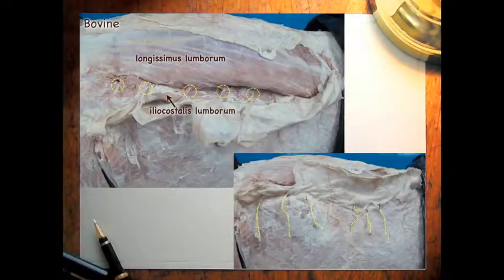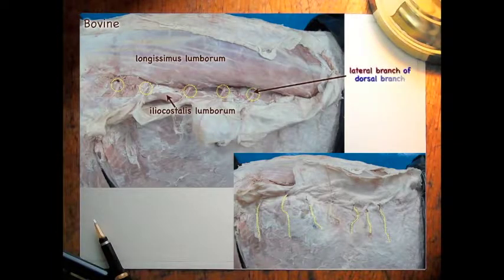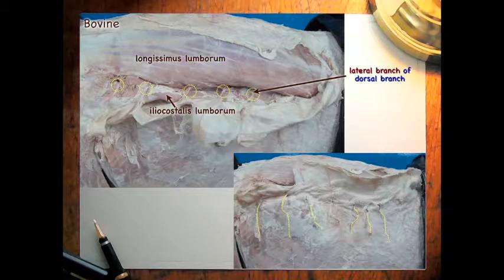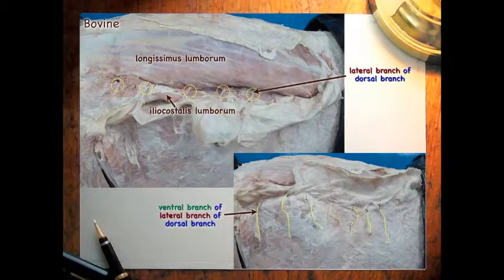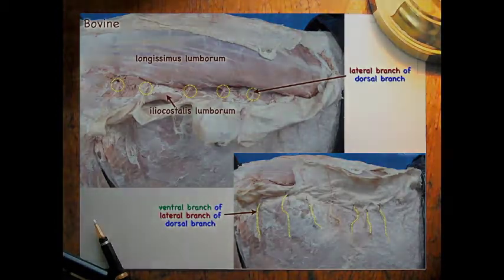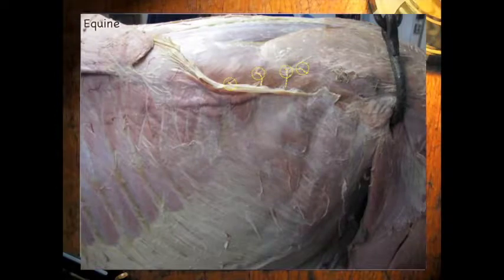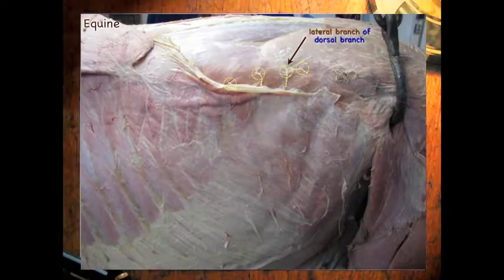Here we have further dissection showing the lateral branch of the dorsal branch coming out along here just under the longissimus lumborum. The lower image shows the ventral branches of those lateral branches. Here is a section from the horse also showing the lateral branches of the dorsal branch.